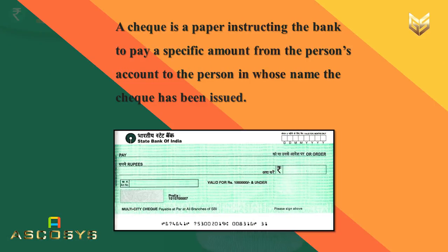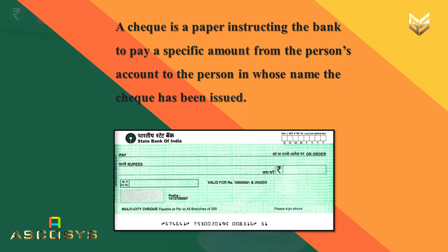A check is a paper instructing the bank to pay a specific amount from the person's account to the person in whose name the check has been issued. A check can be used to make payments directly from a bank deposit without using cash. This is a modern form of money, and a check is one perfect example of modern forms of money.